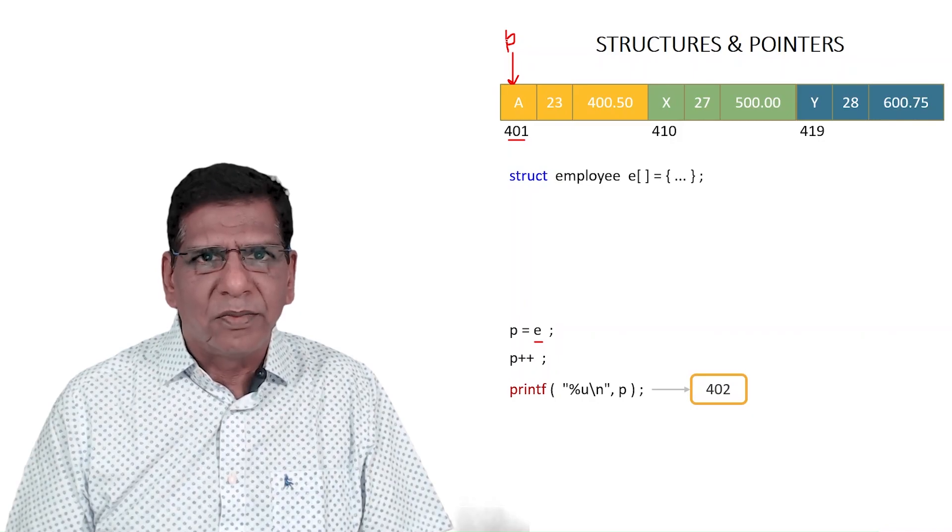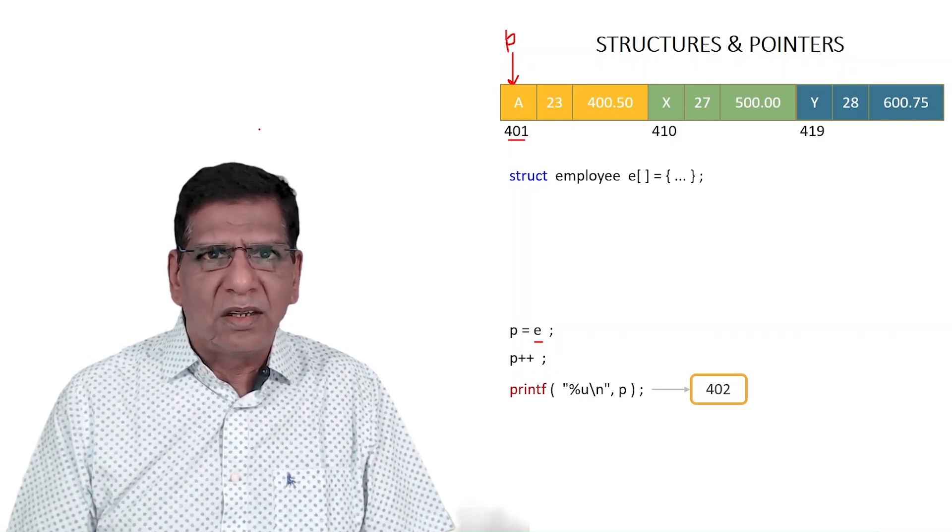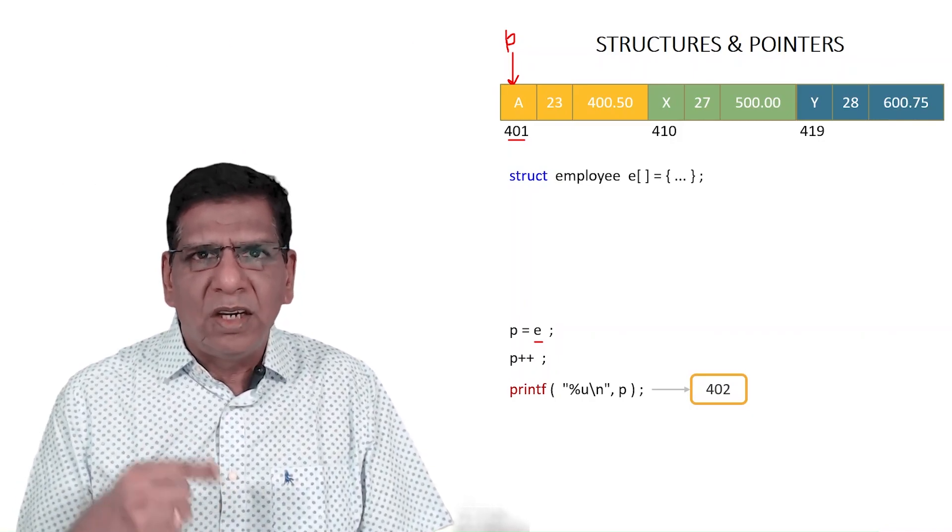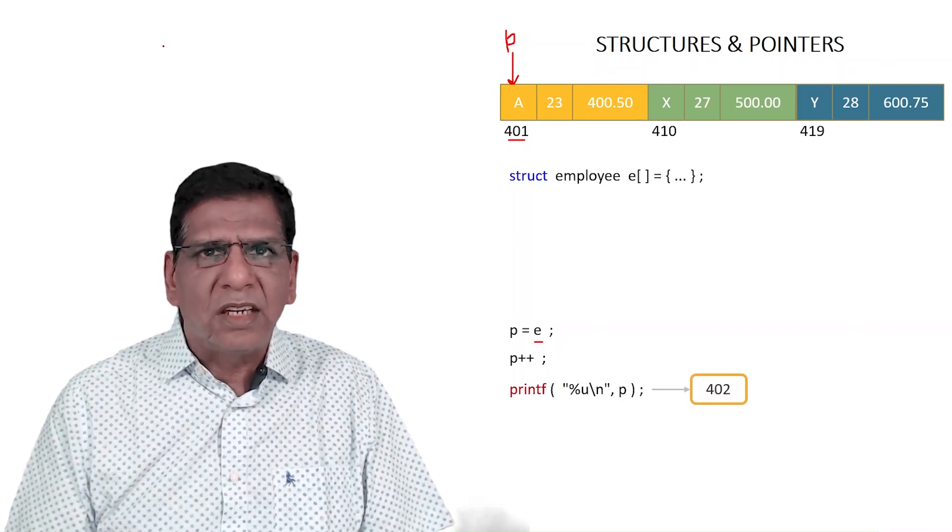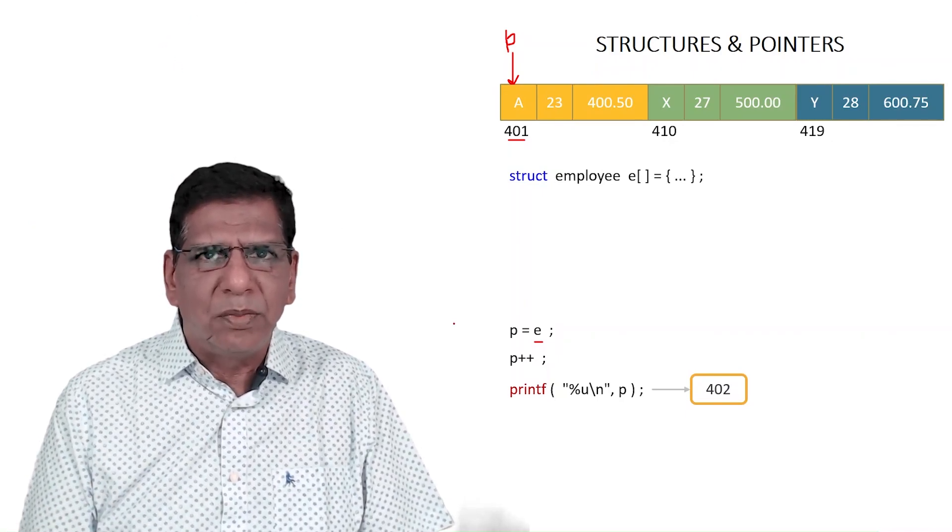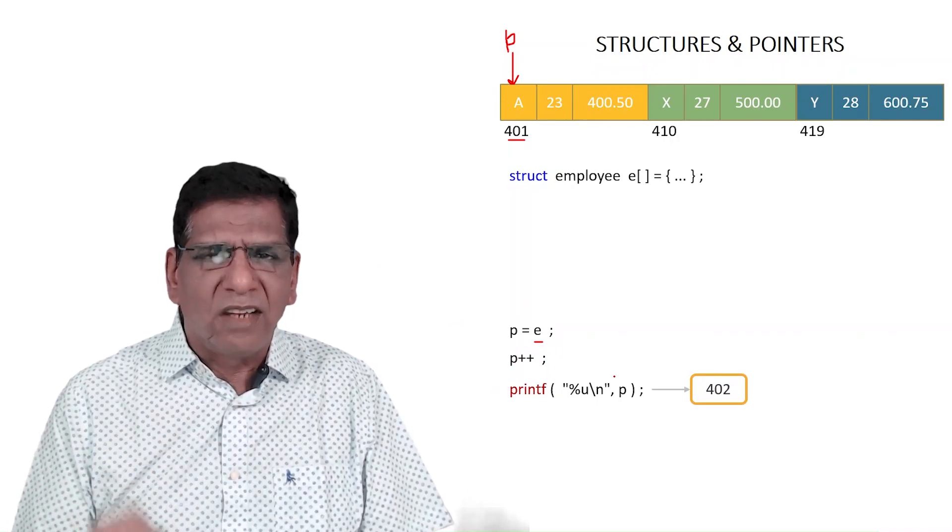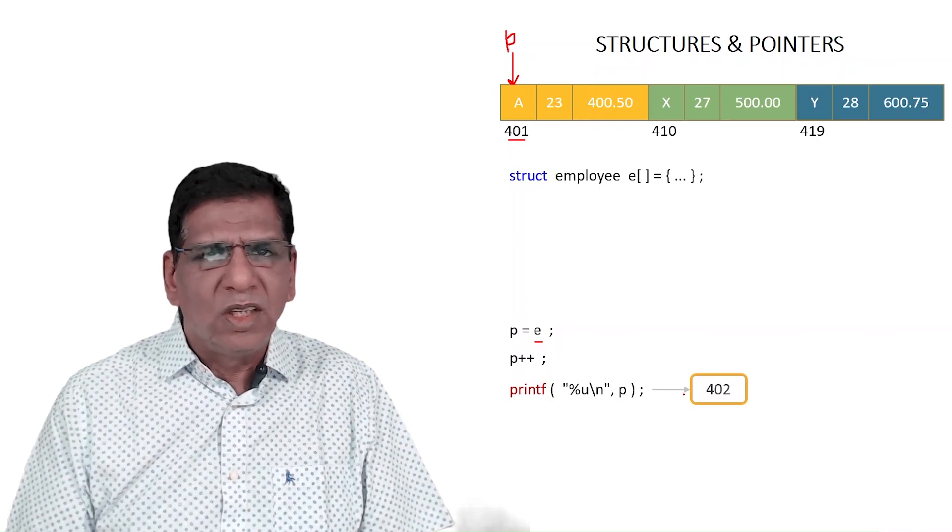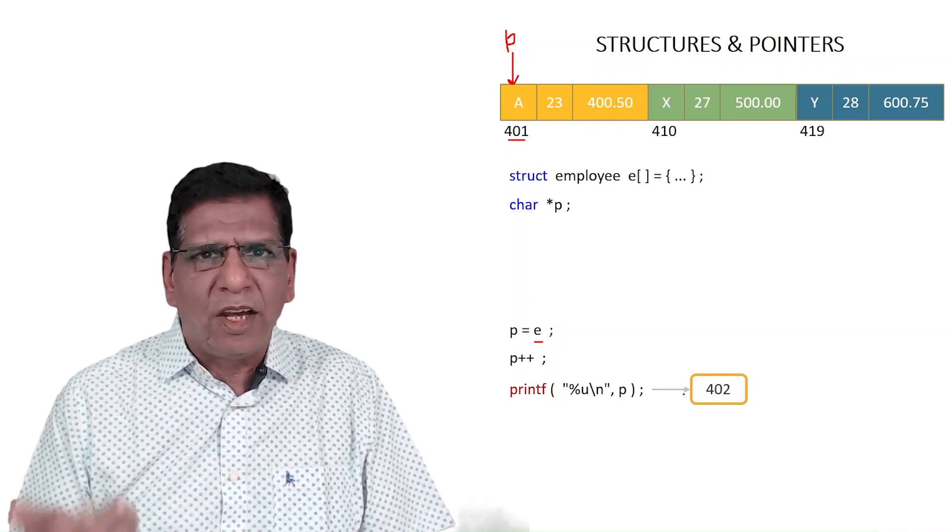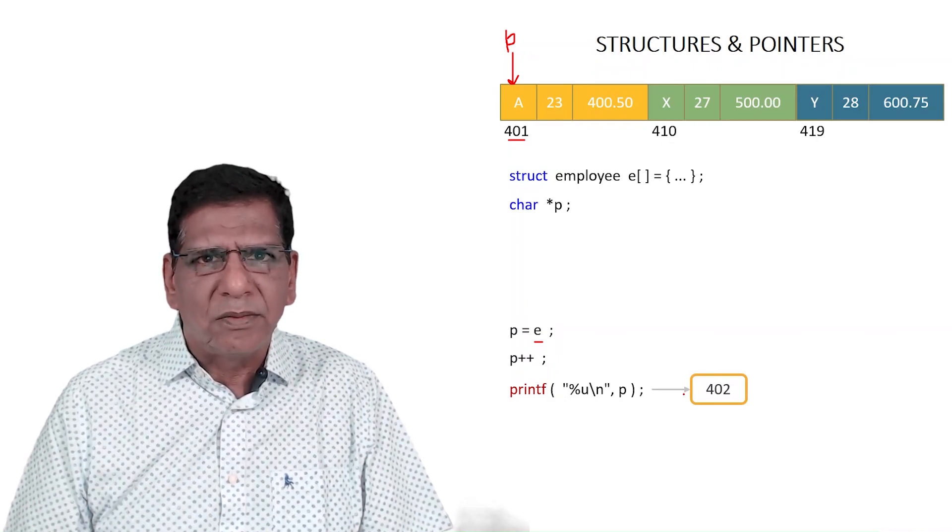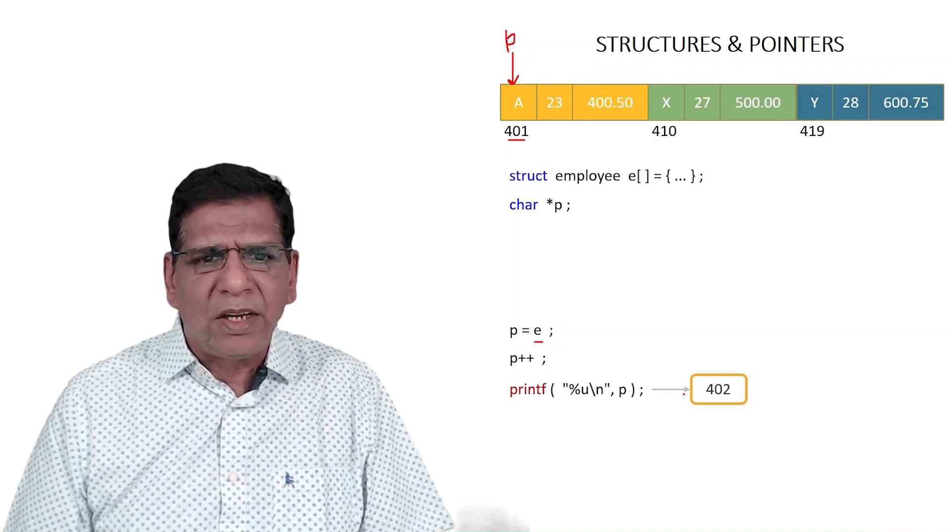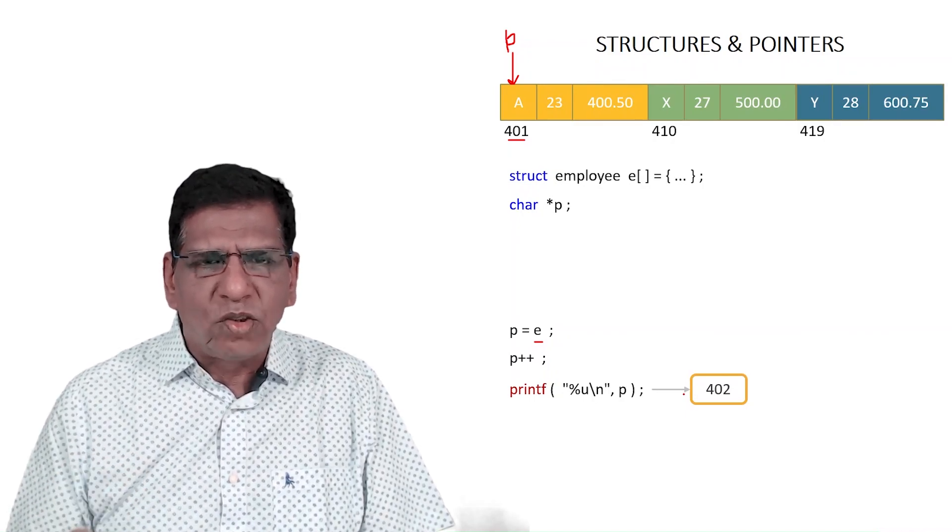Where it will take me depends upon the type of the pointer, because the rule is: increment the pointer, it points to the next location of its type. That 'of its type' is very important. So unless the type of the pointer is known, you would never be able to tell me where P++ would take me.